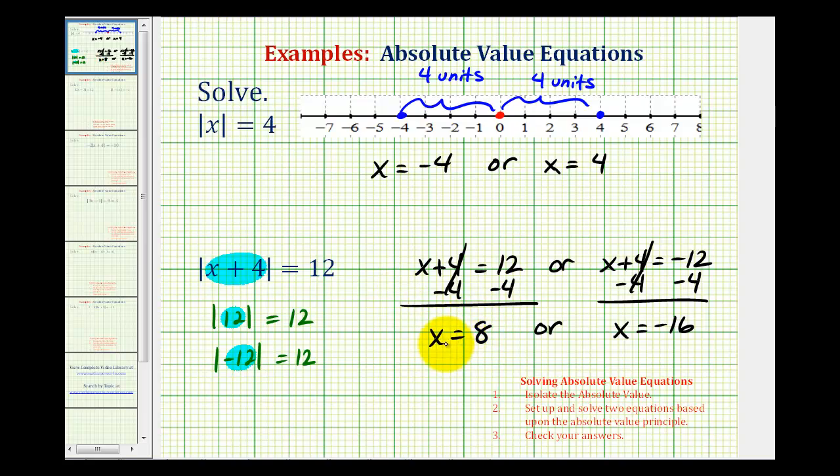So notice these absolute value equations have two solutions. In general when solving an absolute value equation, the first step will be to isolate the absolute value on one side of the equation. This was already done for us in these two problems. And then we're going to set up and solve two equations based upon the absolute value principle, which we discussed here.